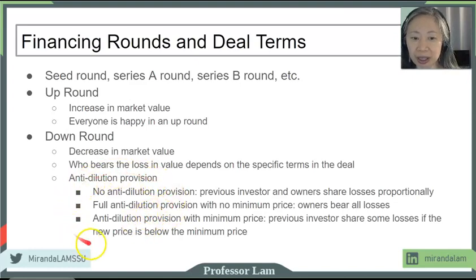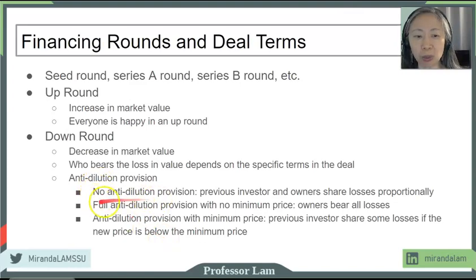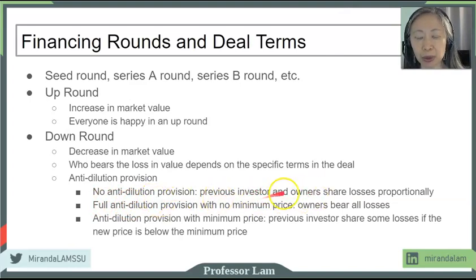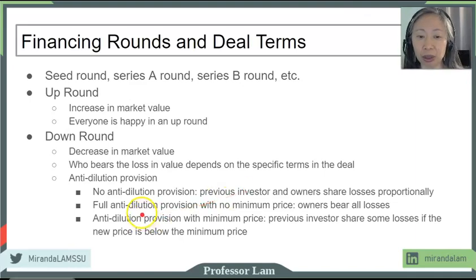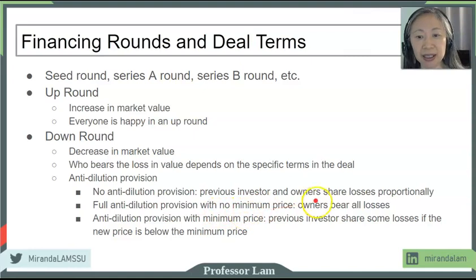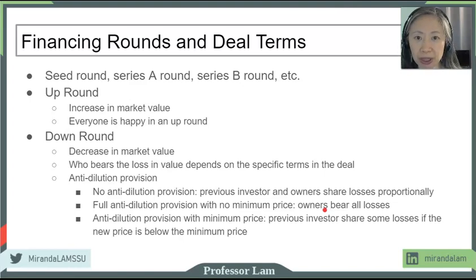Along with the percentage, there is also the anti-dilution provision. For example, if the owner does not want any anti-dilution provision — meaning the owner and the investor will face the same amount of risk — the investor may demand a larger percentage of the firm. On the other hand, the owner could offer a full anti-dilution provision with no minimum price, in which case they will bear all the losses if things don't go well, and they may be able to negotiate a smaller percentage of the firm to give up in exchange for new funding.